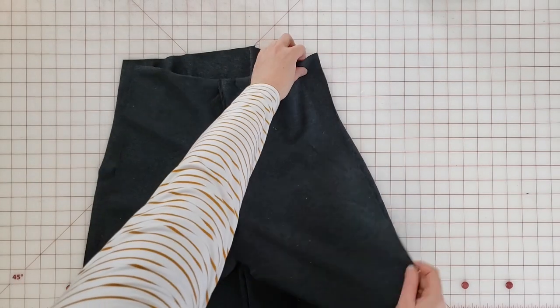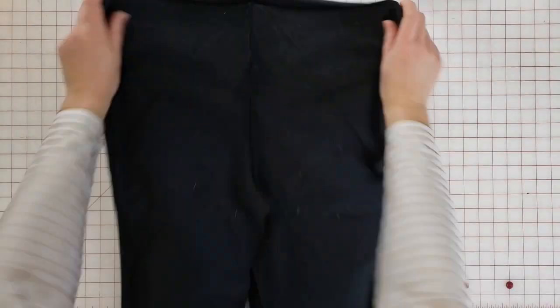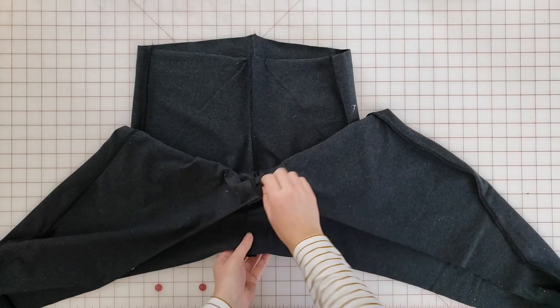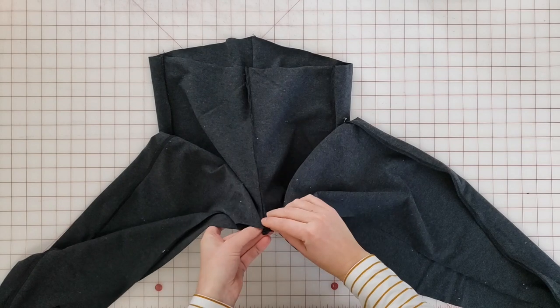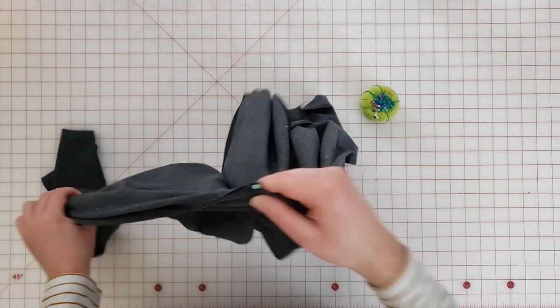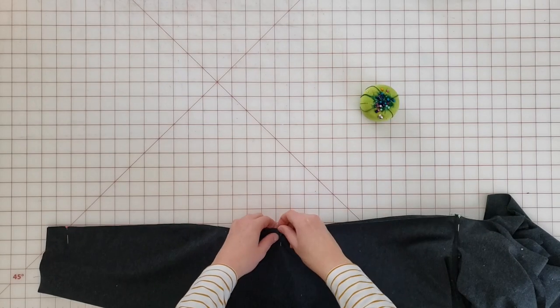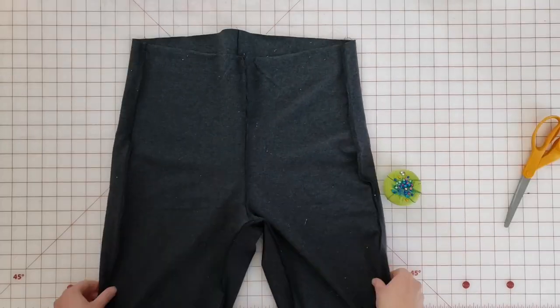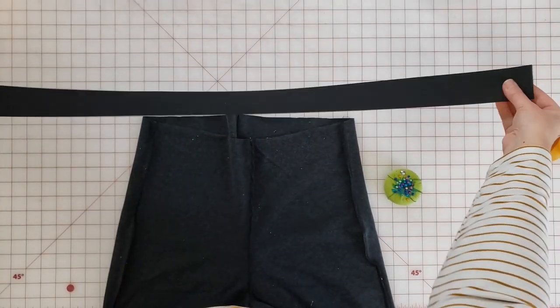If you don't have a serger, you can also use a zigzag stitch or a stretch stitch on your sewing machine. Now I need to attach the inseam. I'm first pinning this at the crotch, then pinning along the entire inseam from ankle to ankle. I will sew that on my serger again with a quarter inch seam allowance. Now my pants are mostly assembled and I have to attach my waistband.